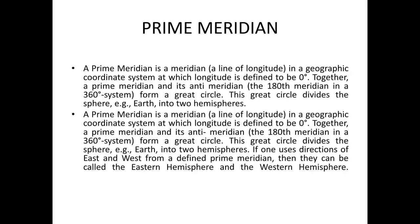As highlighted above, the prime meridian and the international date line, both of which lie diametrically opposite to one another, actually form the great circle which divides the sphere. The prime meridian is defined as zero degree longitude. If one uses directions of east and west from a defined prime meridian, then they define the eastern hemisphere and the western hemisphere.